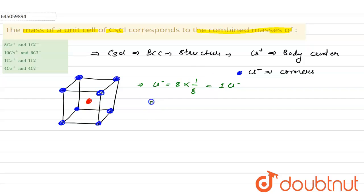One Cl- is there and Cs+ is, there is one into one because it is present at body center and one body center is shared by one unit cell only, so one Cs+.